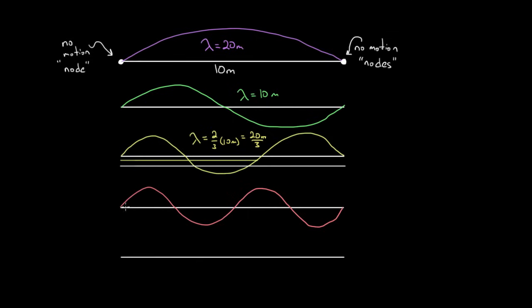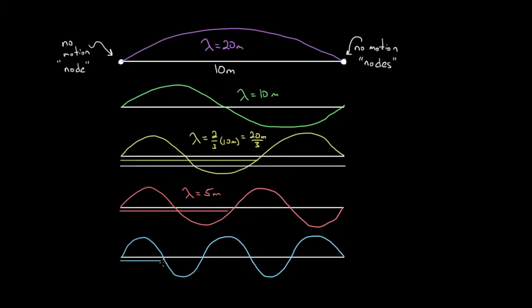The fourth harmonic's wavelength covers half of the string, so the wavelength is half of 10 meters, which is five meters. The fifth harmonic has five humps in the string, so its wavelength is two-fifths of the entire length — two times 10 over five, which equals four meters.